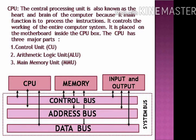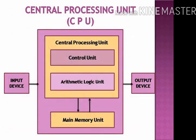The next slide is about the CPU. CPU stands for central processing unit. The central processing unit is also known as the heart and brain of the computer because its main function is to process the instructions. It controls the working of the entire computer system and is placed on the motherboard inside the CPU box. The CPU has three major parts: number one, control unit (CU); number two, arithmetic logic unit (ALU); number three, main memory unit (MMU).